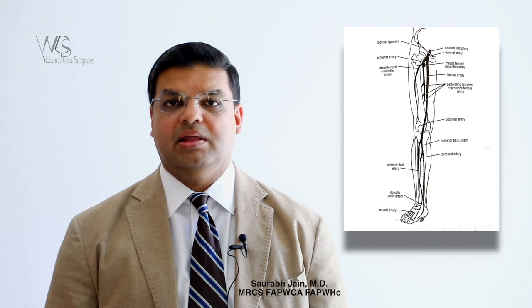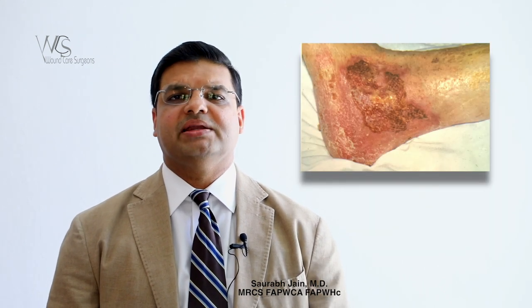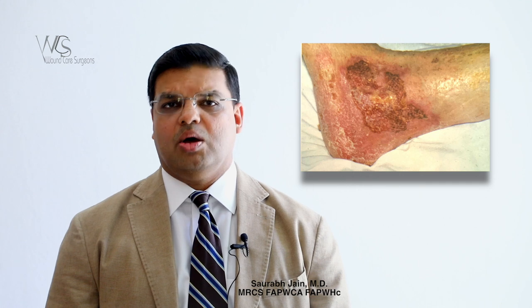Claudication, cold and numb limbs. On limb elevation, you will see a line of demarcation with slow venous filling. Observe pallor — a white, pale, blanched color of the limb when elevated greater than 30 to 45 degrees. Also note altered or diminished sensation.